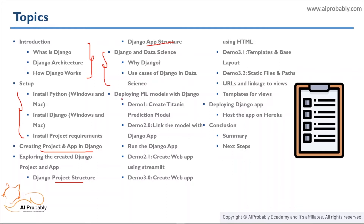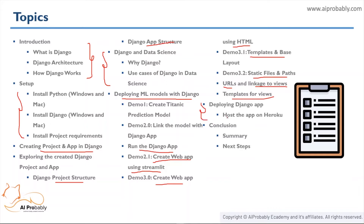Then we'll move to the main practical part: deploying ML models with Django. We'll create a Titanic prediction model using the Titanic dataset and link it to the Django app. We'll also create a web app using Streamlit with the API we created, and a web app using HTML covering Django elements like templates, base layouts, static files, paths, URLs, views, and templates. Finally, we'll learn how to deploy our Django apps using Heroku, and wrap up with a conclusion about what we learned and what to pursue next.